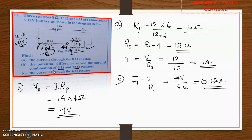If you clearly understand and practice these methods, any type of question will be solvable. Especially in a combination of series and parallel, we have to think carefully: the 12 volt is divided between the resistors. Most students make the mistake of using 12 volt directly to calculate current through the parallel combination, but we have to share the voltage with the 8 ohm resistor. If there are more resistors in series, we must consider all of them.